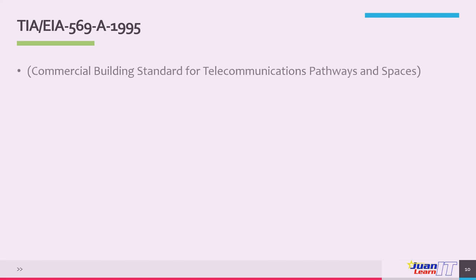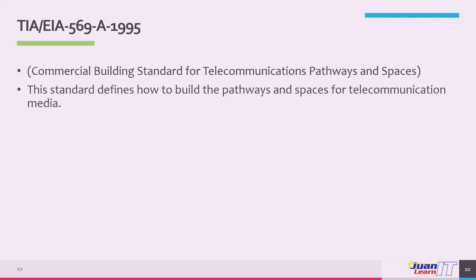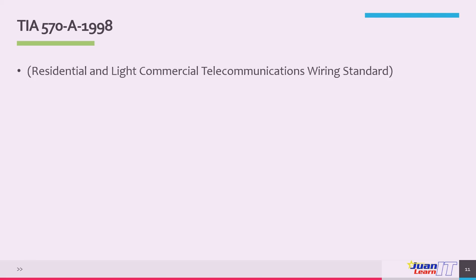The TIA EIA 569A series of 1995, the commercial building standard for telecommunication pathways and spaces, defines how to build the pathways and spaces for telecommunication media. The TIA 570A series of 1998 covers the residential and light commercial telecommunication wiring standard and specifies residential cabling.